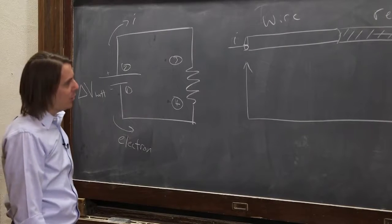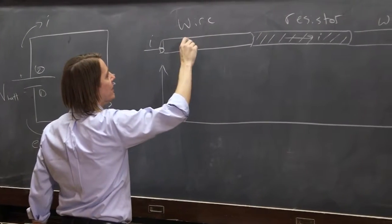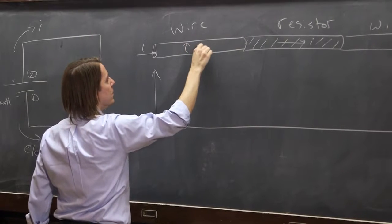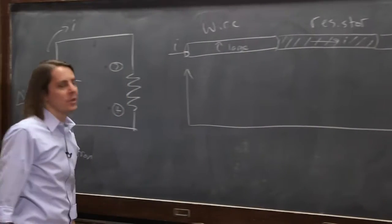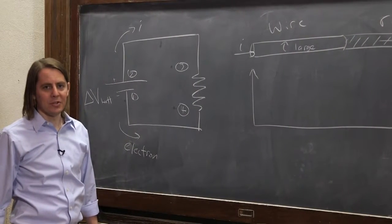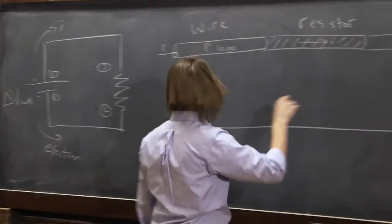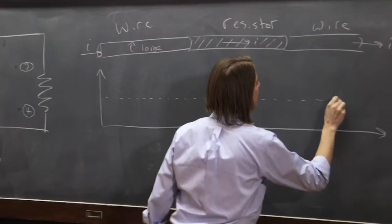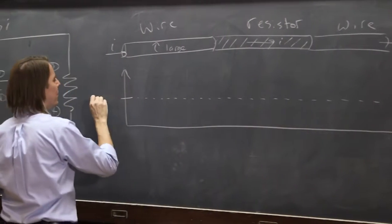Now, since this is a good conductor, its tau is very large. So it can go a long time between collisions. But it has to maintain the same V-drift. Because the same current has to flow everywhere.